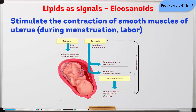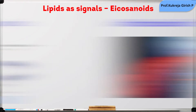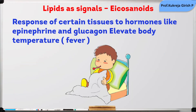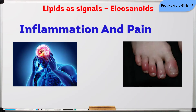Prostaglandins stimulate the contraction of smooth muscles of the uterus, control the blood flow, the wake up and sleep cycle, response to epinephrine and glucagon, and some are involved in fever, inflammation and pain.